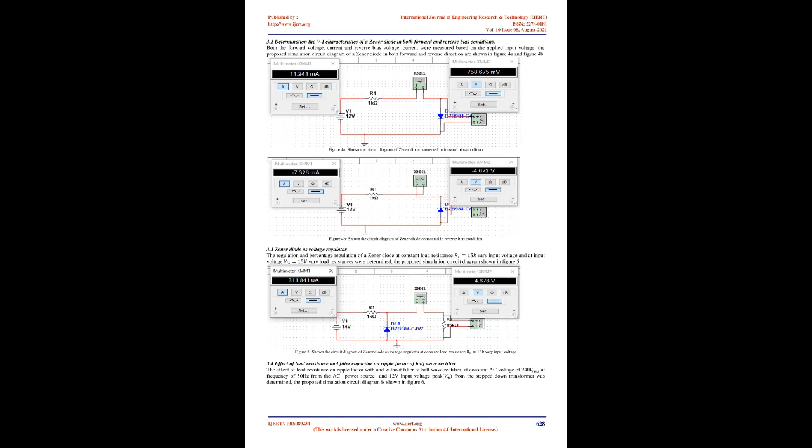Results and discussion: Results of the simulated PN junction diode in both forward and reverse directions to determine its VI characteristics. By varying the supply voltage from the DC power source in steps, the corresponding values of forward voltages and forward currents were noted down, and the VI characteristics of the PN junction diode in forward direction was determined graphically as shown in Figure 9A.